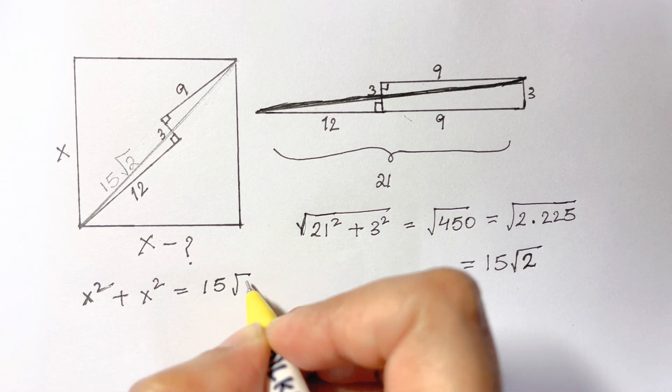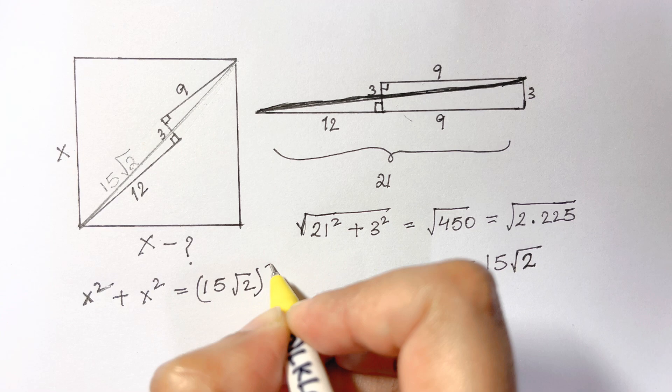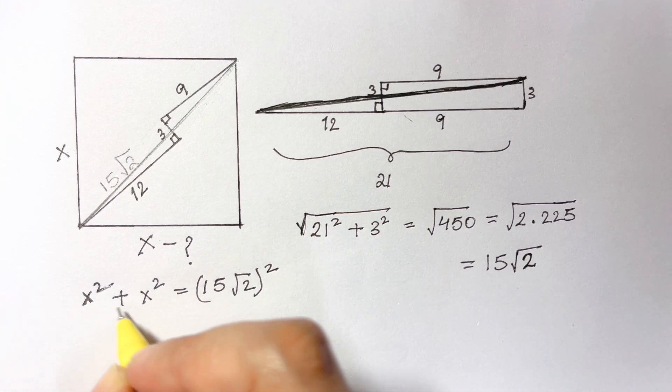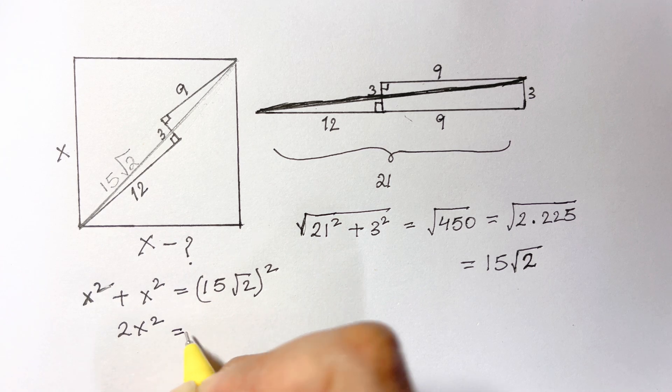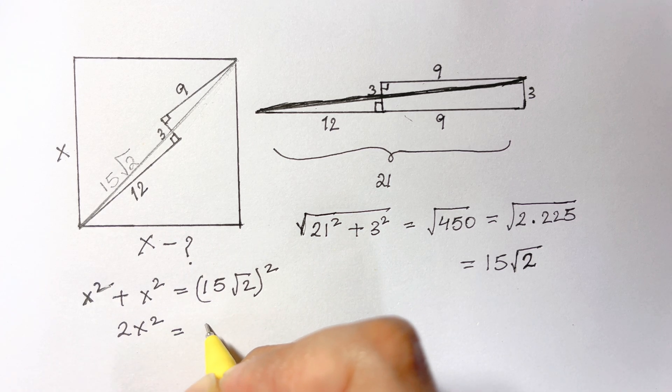So we have x² + x², that is 2x² is equal to 15√2 whole squared.